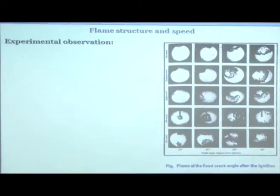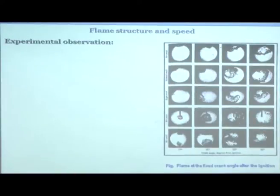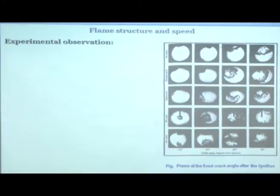A second experiment was done where the spark plug was on the side of the combustion chamber. People thought: why not put the spark plug in the center? They developed a special spark plug with central ignition. In the no-swirl, single-spark center case, you can see that at 10 degrees, 20 degrees, and 30 degrees the combustion is already essentially complete by 20–25 degrees.